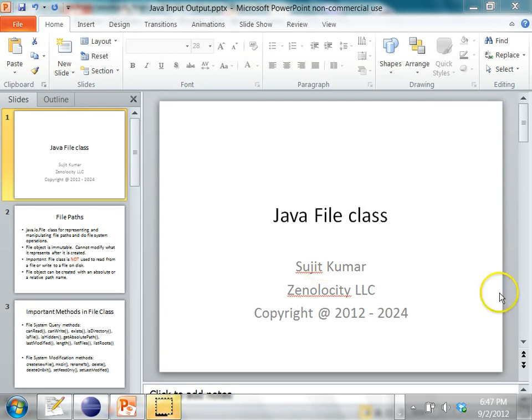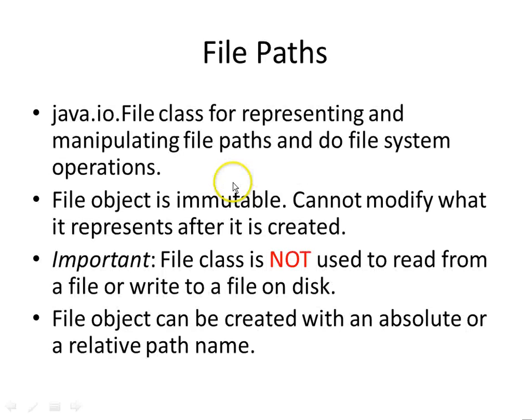In this class we will see what the File class provides in the java.io package. In Java there is a class called the File class which is in the java.io package. This class is used to represent and manipulate file paths and do some file system operations. The File object is immutable — like the String class, once it has been created you cannot modify what it represents. If you create a File object with a certain path, it will always point to the same path; you cannot make it point to another path.